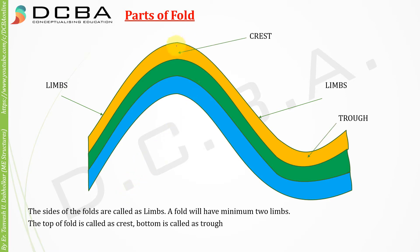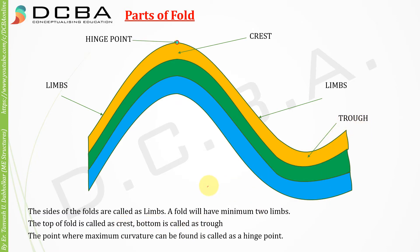The topmost part is called the crest, and the bottom of the fold is called the trough. The point where maximum curvature can be found is called the hinge point. Maximum curvature will always be at the outermost point, so this point here is called the hinge point.